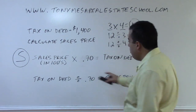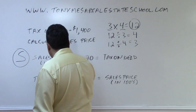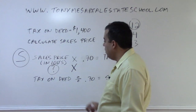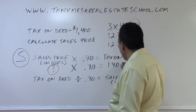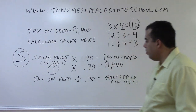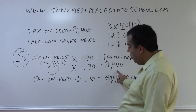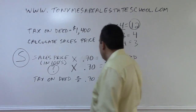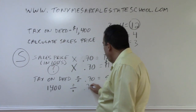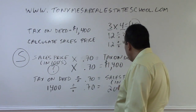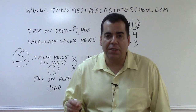So what happens mathematically here? We're asked to calculate the sales price — we don't know that number. But we know that number multiplied by 70 cents gives us the tax on the deed, which is $1,400. So if we take $1,400 and divide it by 70 cents, we get 2,000. Now 2,000 is not the sales price — 2,000 is the sales price in hundreds.